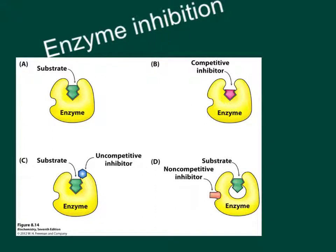Now I'd like to talk about enzyme inhibition and the effects on the Michaelis-Menten constants such as Vmax and KM. What we have here in this picture are the three main different types of inhibitors. This would be the substrate binding to the enzyme, and typically this would be either cleaved into two different products or the conformation would be changed — transferring a functional group from one place to another, or any number of things that the enzyme could do to the substrate.